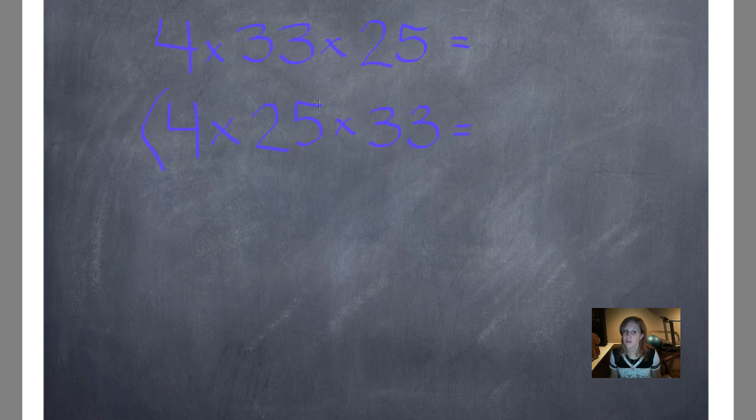And I'm going to use the associative property to group the 25 with that 4. 4 times 25 is 100. Now I bring down the numbers that are left, multiplied by 33.